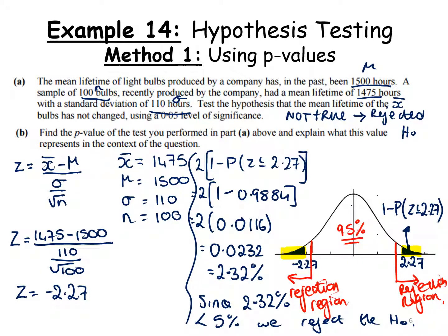The last part is explain what this value means in context of the question. A nice quick way to answer would be to say the probability of accepting the null hypothesis is 2.32%. Since that's less than the 5% chance we're wrong, that's not good. Just for you to understand, because 2.32% is much smaller than 5%, that's problematic.